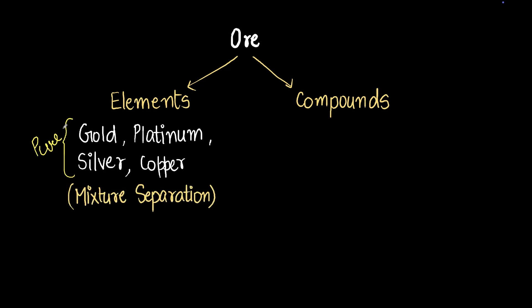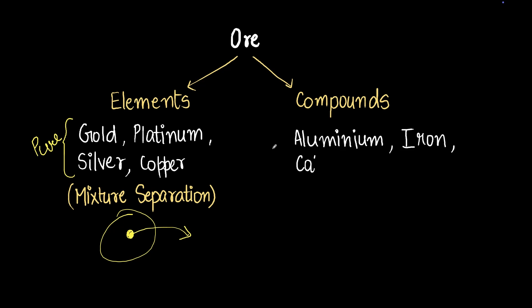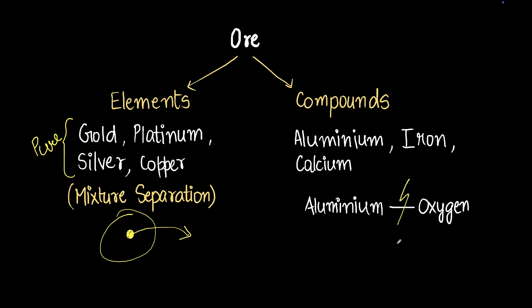It's relatively easy to extract metals that exist in pure form — all you need to do is separate the mixture and you get the pure metal out. For example, you separate silver out by boiling, heating, and similar methods to get pure gold, platinum, or silver. With compounds, it's more complicated. Metals like aluminium, iron, and calcium exist as compounds — aluminium and oxygen have a chemical bond. To remove aluminium, we have to break that chemical bond, which frees up the aluminium and gives us pure aluminium.